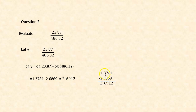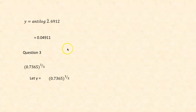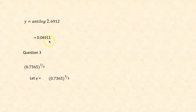In the subtraction, when we get to 3 minus 6, we borrow 1, making it 12 minus 6 = 6. We have borrowed 1 here, making that digit 0, and then we have minus 2, giving bar 2.6912. To find y, we calculate antilog of bar 2.6912. In the antilog table, look at 69 under column 1, giving 4909, and under mean difference 2 it is 2 — so 4909 plus 2 = 4911. Since the characteristic is bar 2, the answer is 0.04911.